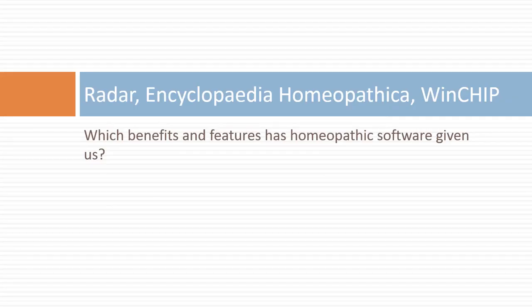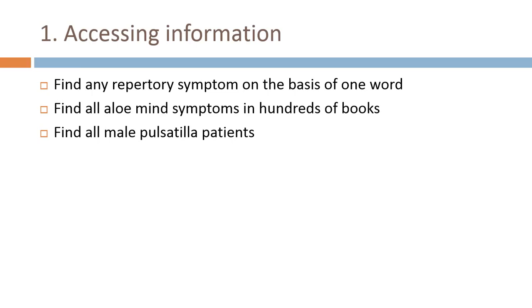While explaining the dreams we had in these last 5-6 years, let's start with a brief review of what homeopathic software has been bringing to you as a benefit and a feature. Homeopathic software gives you the possibility to access information in a very fast and unprecedented way — like one word will show you all the symptoms in the repertory containing that word, or you can do searches in hundreds of Materia Medica books, or in your patient file use queries to find patients responding to certain criteria.